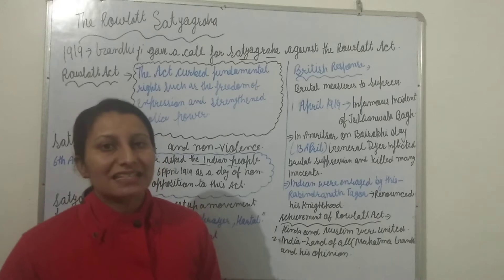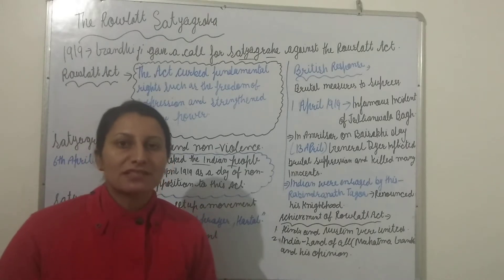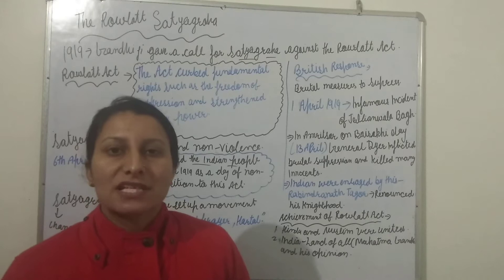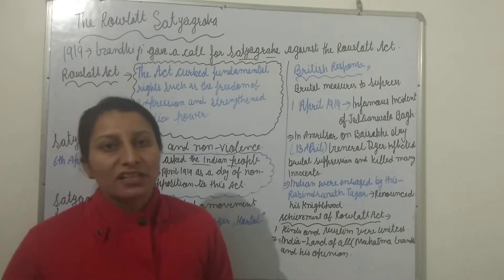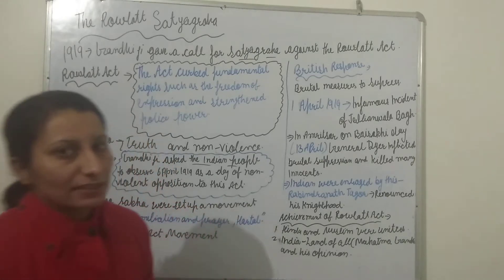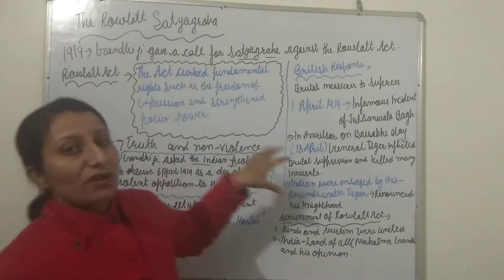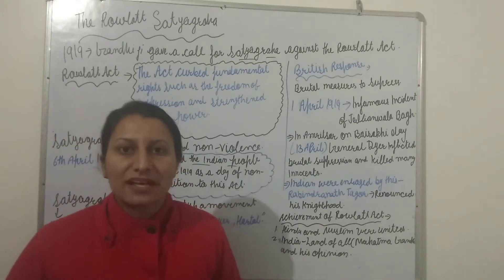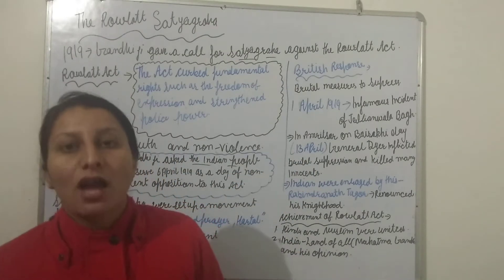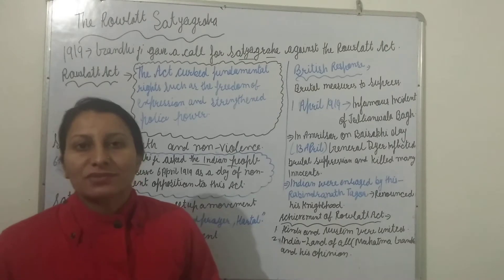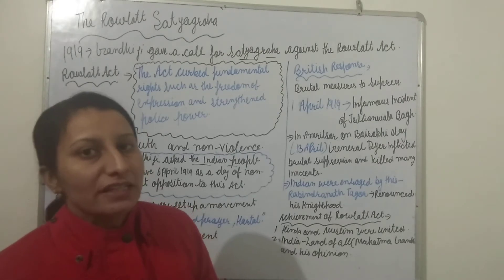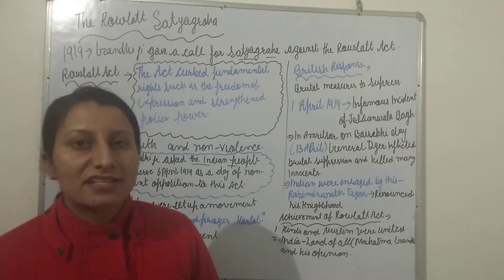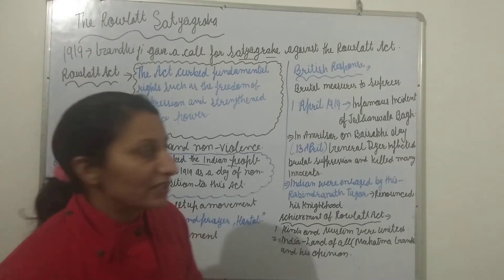Under the Rowlatt Act, accused persons were directly put in prison without being brought before a magistrate — there was no proper justice-based process. All Indians were being put in prison while the justice system was not being followed. This is why Indians were against the British.